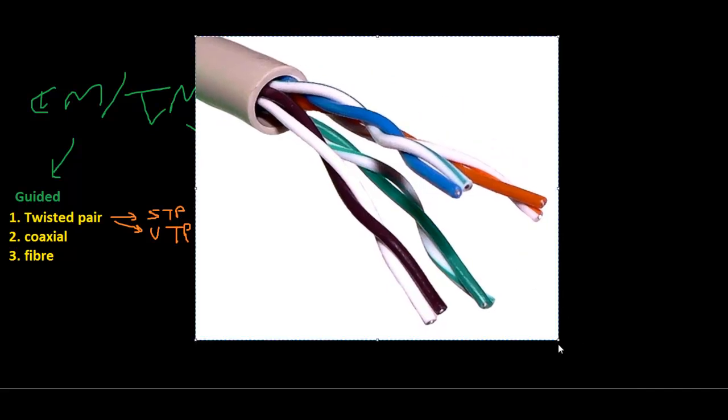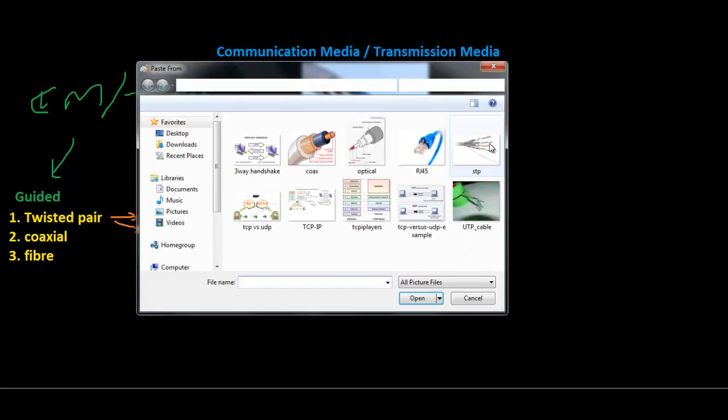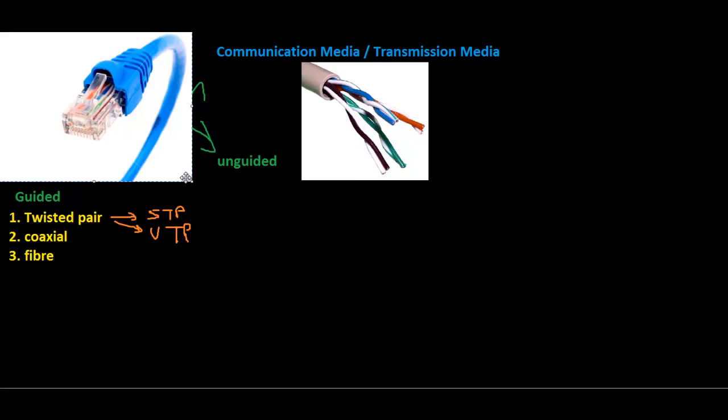This is an example of the unshielded twisted pair. With UTP, there are two copper wires surrounded or insulated by a thin layer of plastic. Twisting prevents interference. They are normally used with the RJ45 connector. We use it a lot when setting up our network. This is the RJ45 connector where these wires connect.